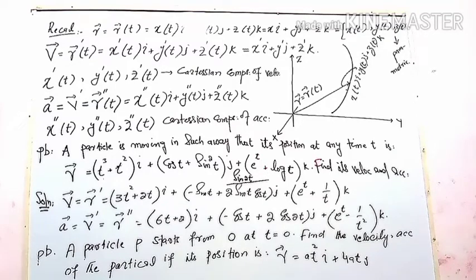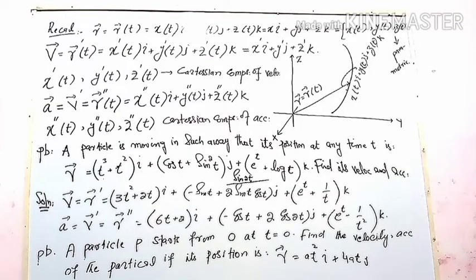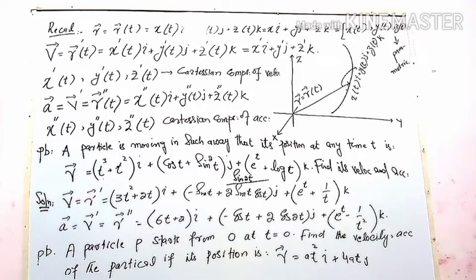The problem is to find the velocity and acceleration of this moving particle. To find the velocity, we take the time derivative of the position vector — the first order derivative with respect to t gives the velocity.